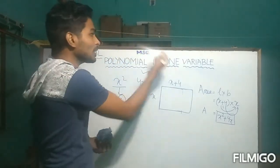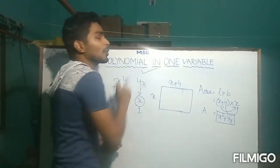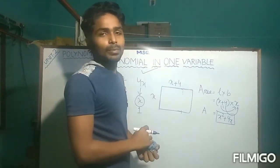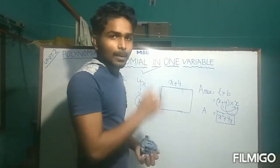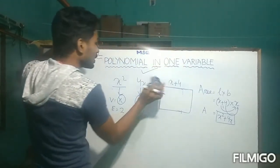So, what is polynomial in one variable? Any polynomial which contains only a single variable is called a polynomial in one variable.